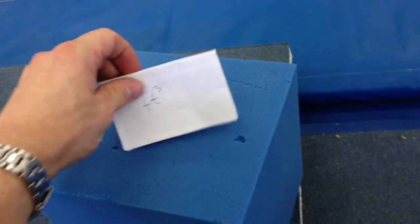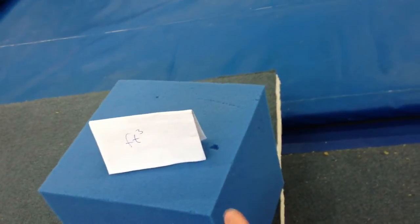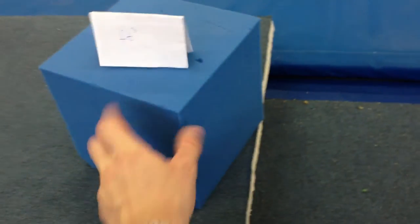A foot has 12 inches in it. A cubic foot has 12 inches for length, width and height. And it is a cubic foot because it is a cube.